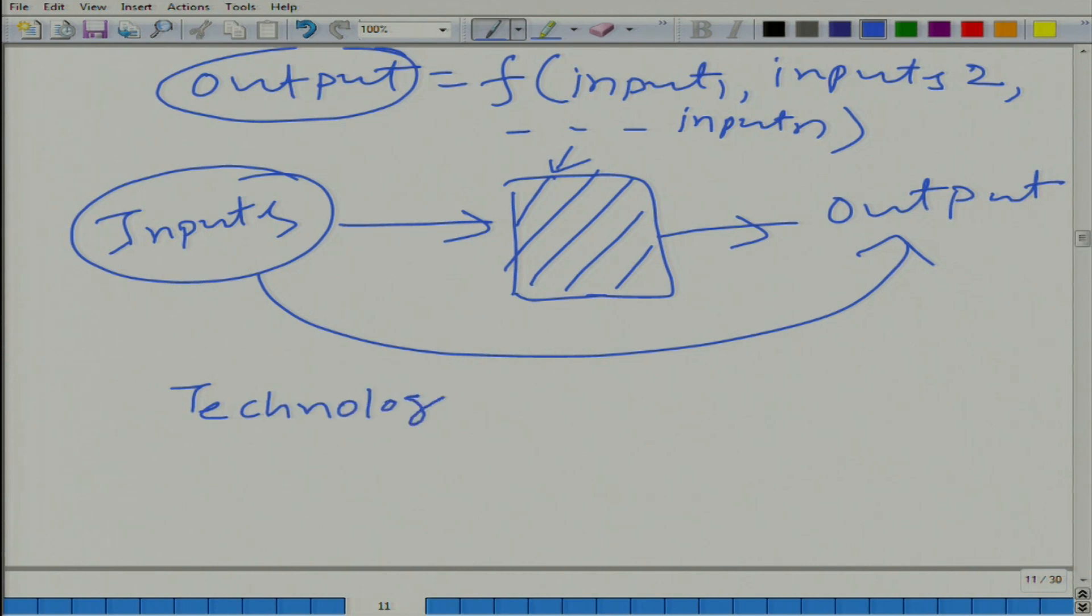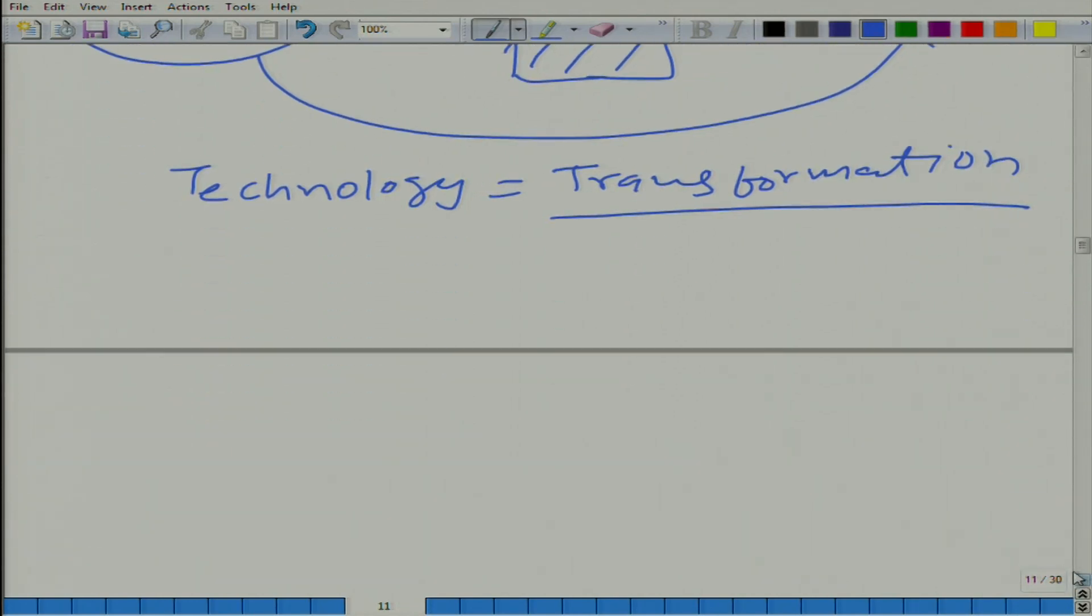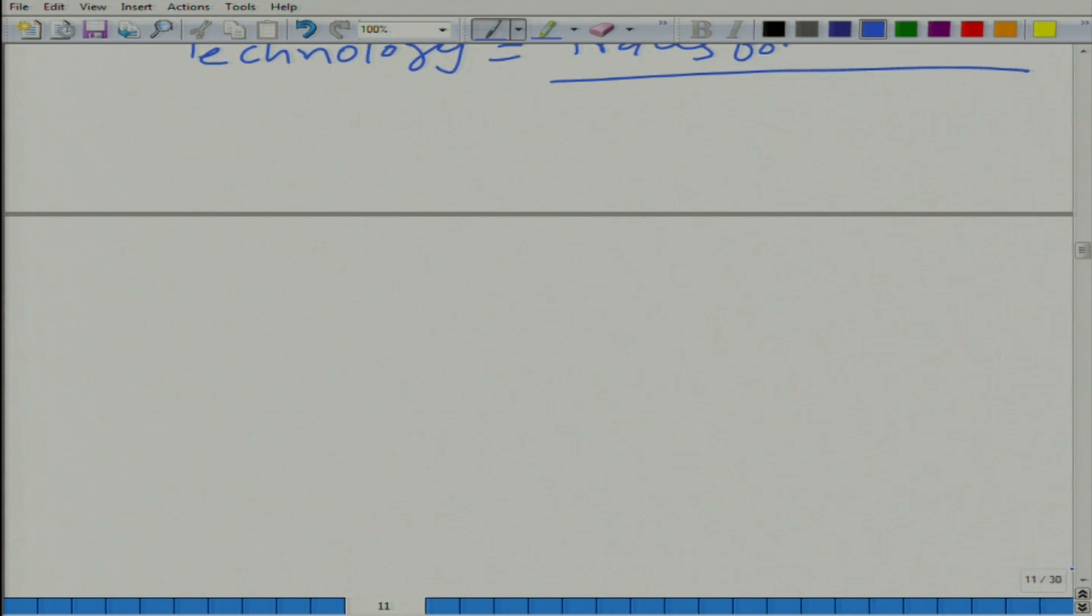So when I talk about technology, I am not talking about smelting process or agriculture or software production. I am just talking about the way that inputs can be combined and an output can be obtained. So in a very general way, in a very abstract way, we are going to talk about technology, and technology here is simply transformation - transformation of inputs into an output or more than one output. There are various ways to represent this technology and we are going to learn some of the ways to represent it.